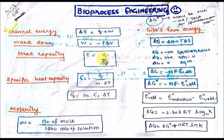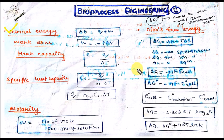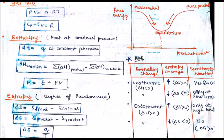Heat capacity is defined as Q heat divided by the change in temperature. This is the formula of Gibbs free energy: delta G equal to delta H minus T into delta S, where delta S is the entropy change. Delta G can also be defined as negative nFE.